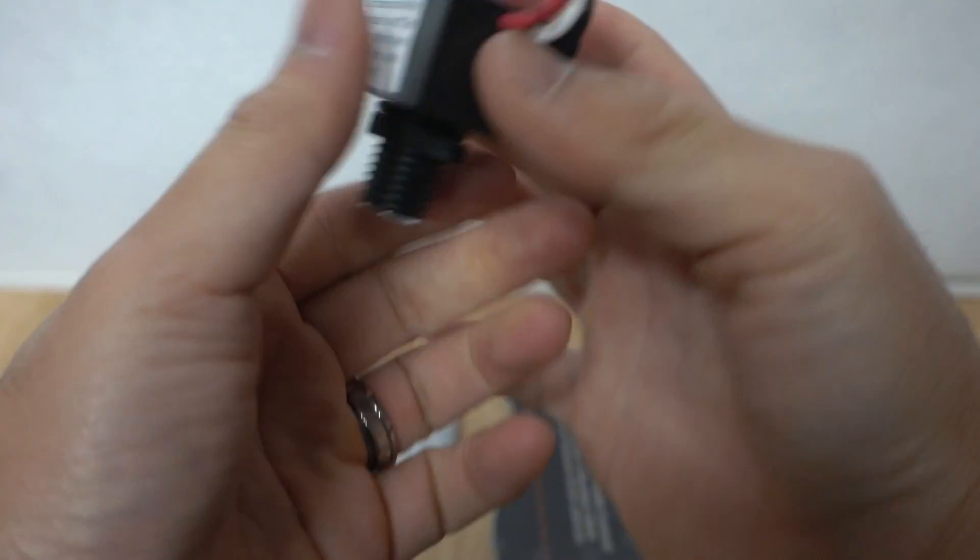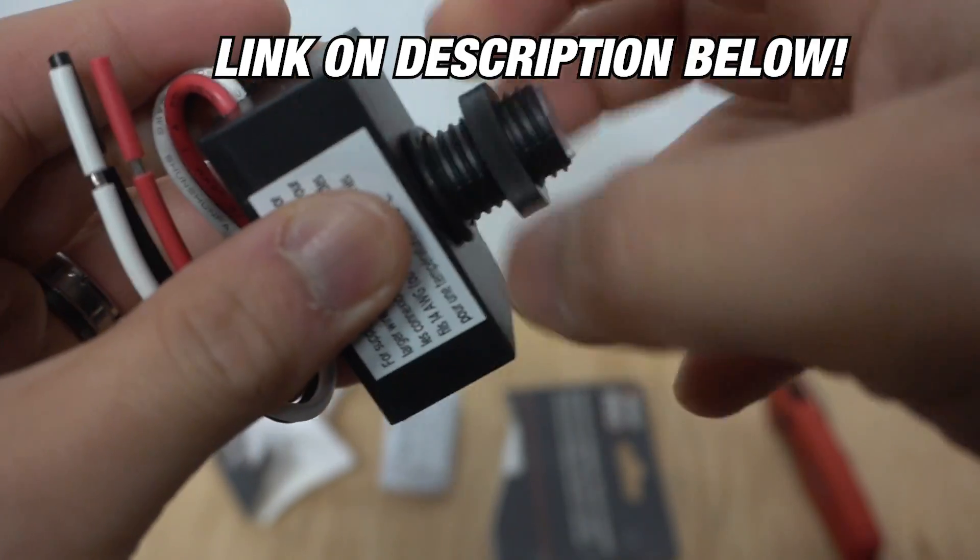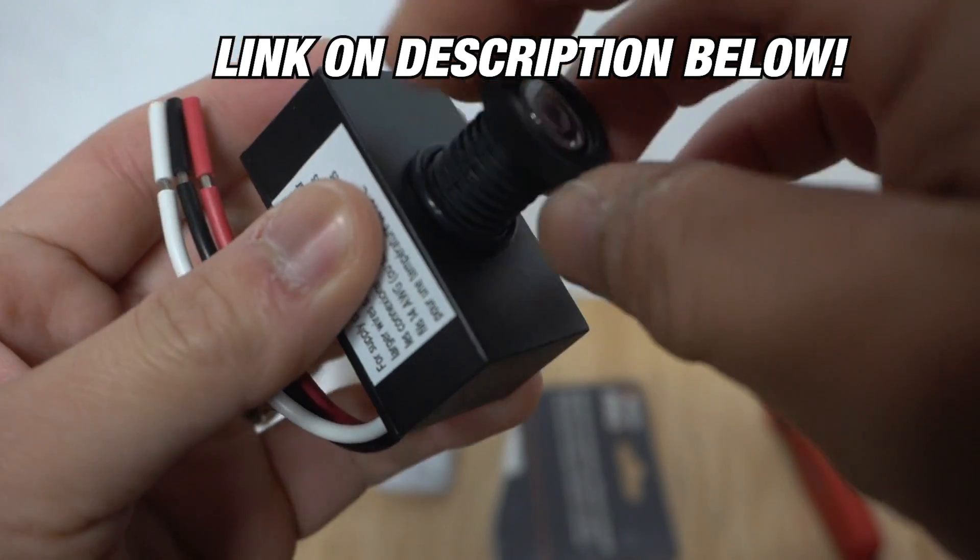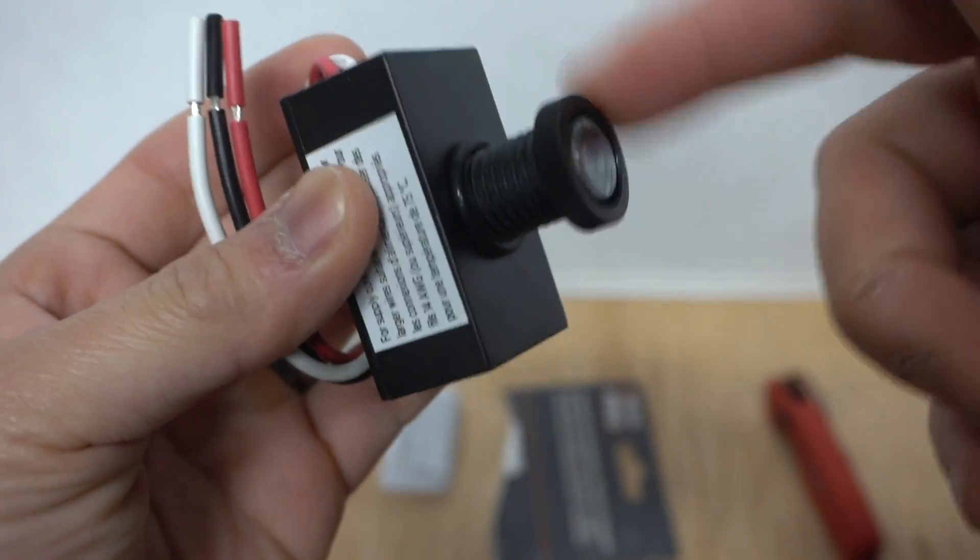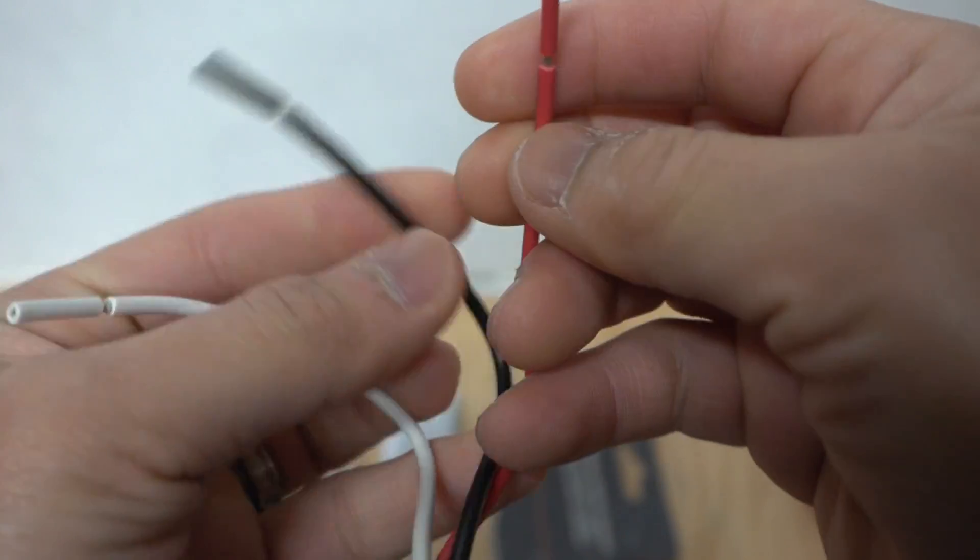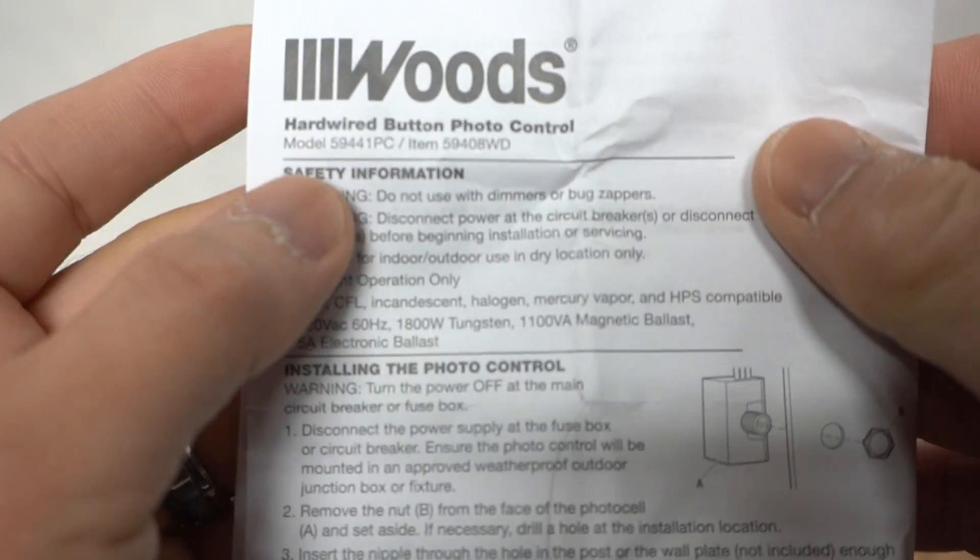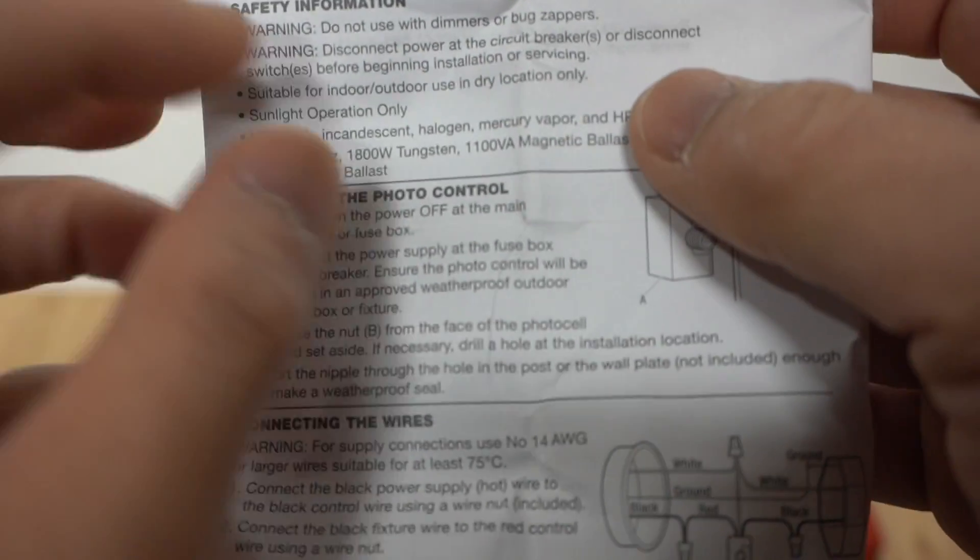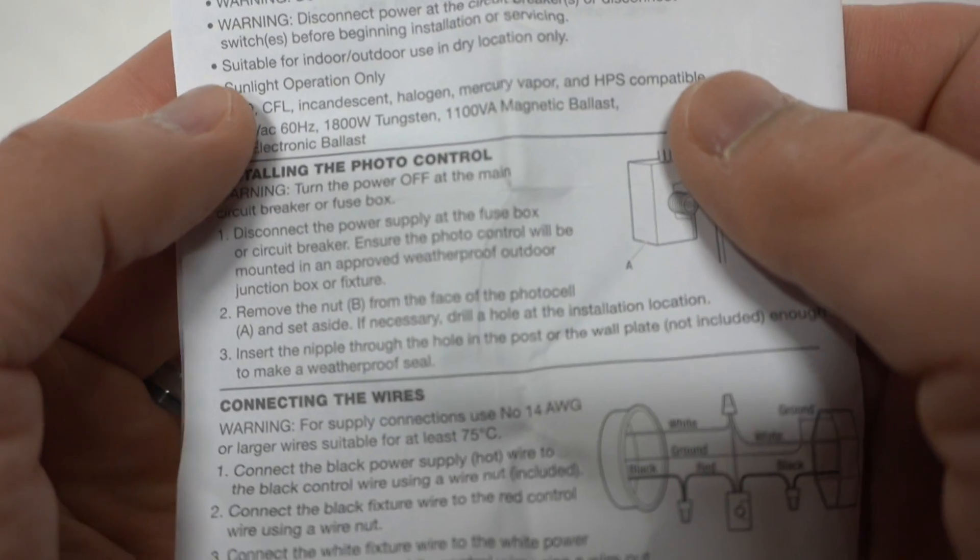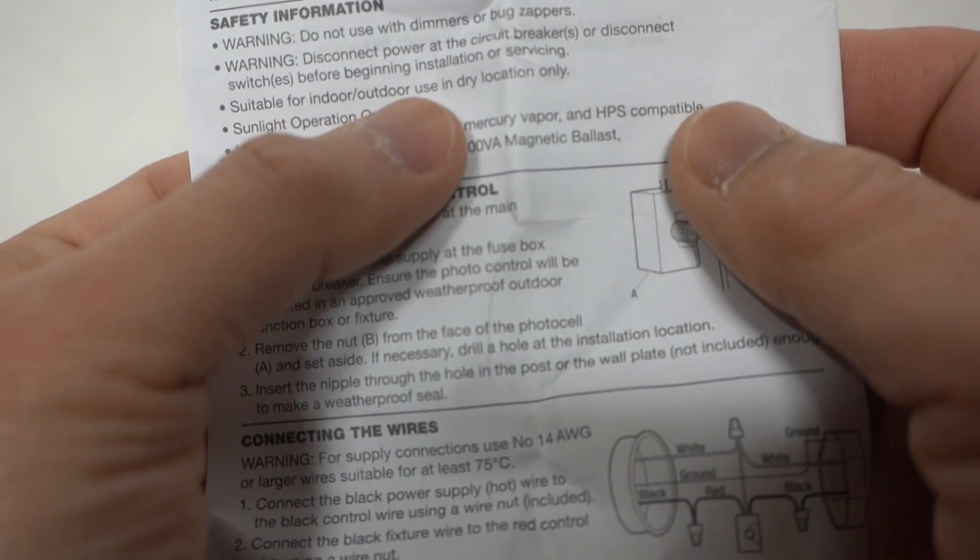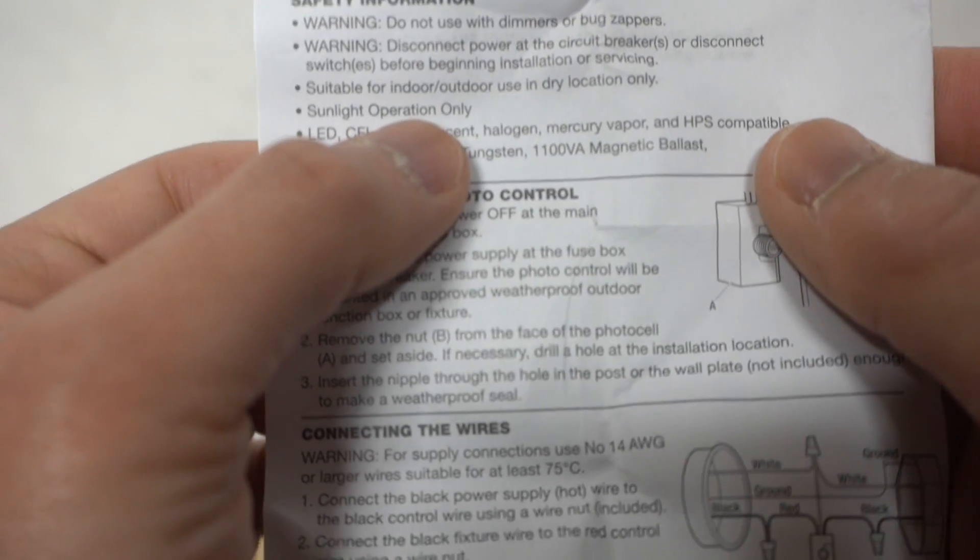It is just a small rectangular box with the sensor at the tip. It has a little threaded ring right over it so that when you put it right through the hole by your light fixture, you can lock it in place. It has a hot, neutral, and another hot right here. Make sure you follow the safety information. Do not use with dimmers or bug zappers. Disconnect power to circuit breaker. Suitable for indoor outdoor use in dry locations only. Sunlight operation only.